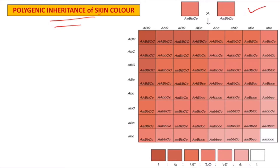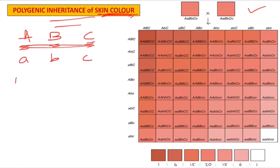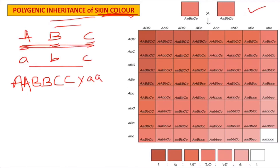For skin color, three genes are going to control it: Gene A, Gene B, and Gene C. The dominant forms are capital A, capital B, capital C, and the recessive forms are small a, small b, small c. We always write genes in pairs, so the fully dominant genotype is AABBCC and the fully recessive genotype is aabbcc.